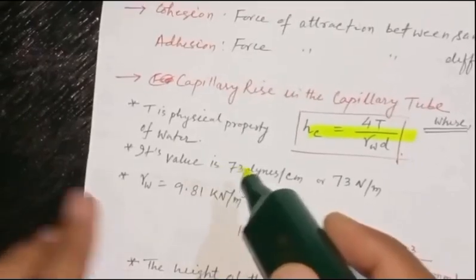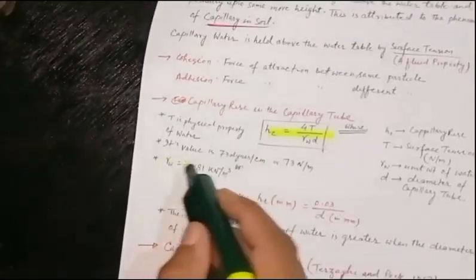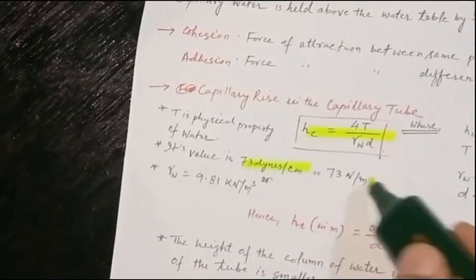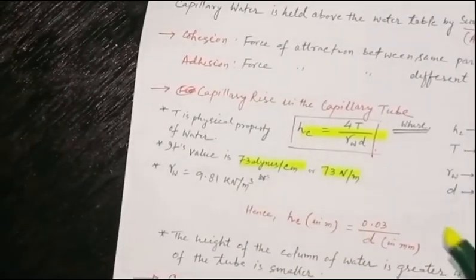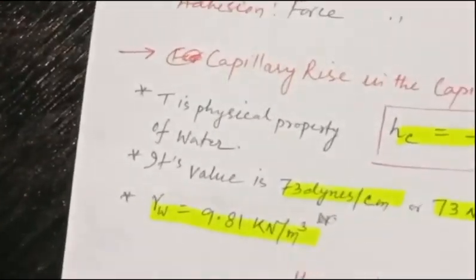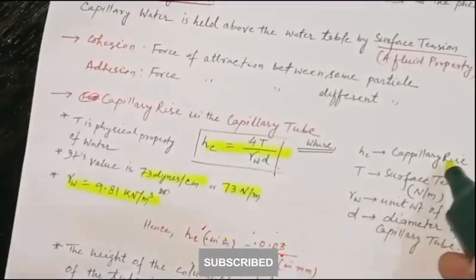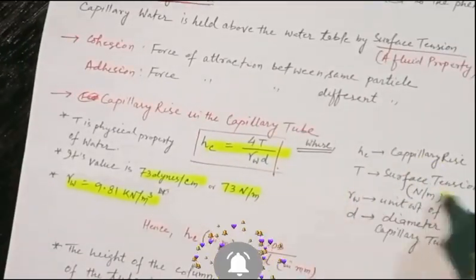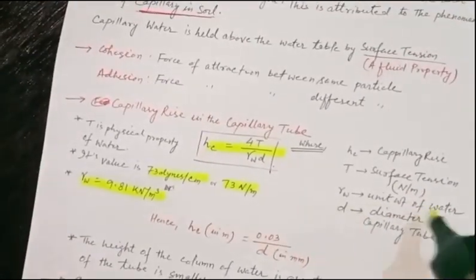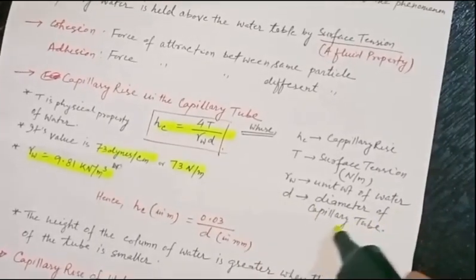Where T is surface tension, a physical property of water with a value of approximately 73 dynes per centimeter. γw is the unit weight of water, 9.81 kilonewtons per meter cubed. In this formula, hc is capillary rise, T is surface tension in newtons per meter, γw is unit weight of water, and d is the diameter of the capillary tube.